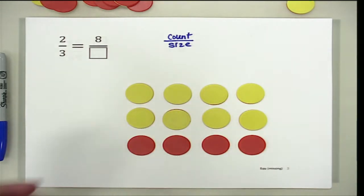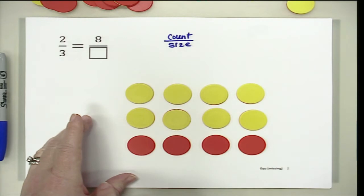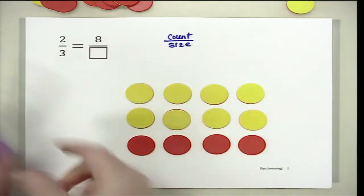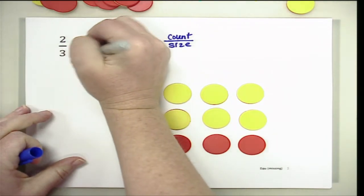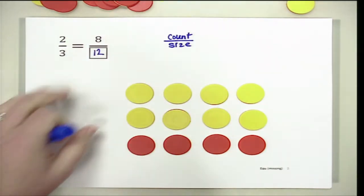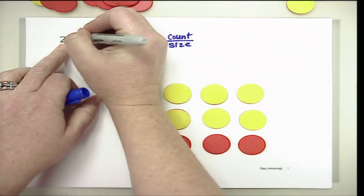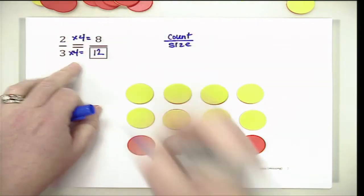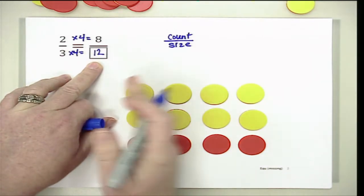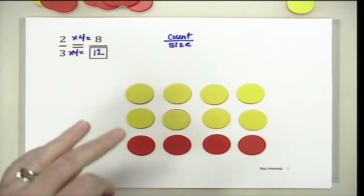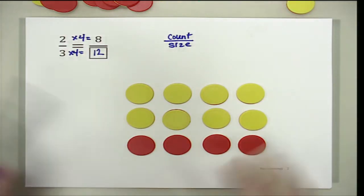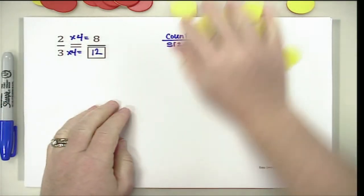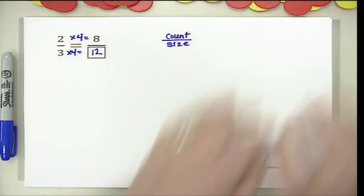Now we need to figure out what the size is. The size is going to be 3, 6, 9, 12. I can double-check: I multiplied by 4 to get to 8, and multiplied by 4 to get to 12. You can easily see I have 4 rows, which got me to a size of 12. That is how you compare and figure out equivalent fractions.